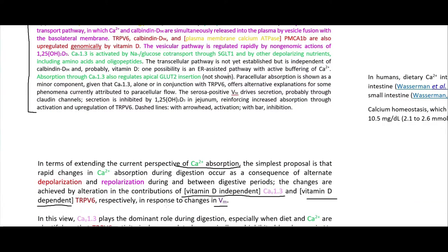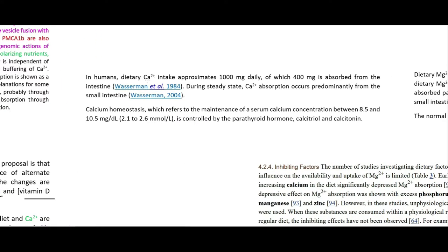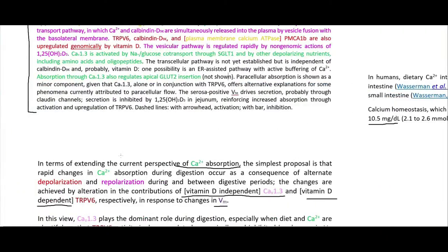In humans, dietary calcium intake is approximately 1,000 milligrams per day, of which about 400 milligrams is absorbed - roughly 40% bioavailability. During steady state, calcium absorption occurs predominantly in the small intestine. Calcium homeostasis - maintaining serum calcium between 8.5 and 10.5 milligrams per deciliter - is controlled by parathyroid hormone and other hormones involved in calcium resorption from bone.